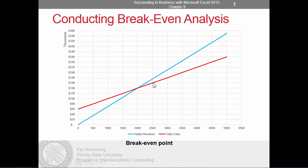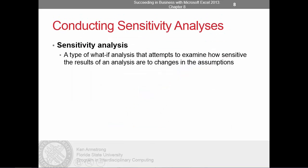Now let's look at a sensitivity analysis for our swim skins. Sensitivity analysis is another type of what-if analysis that examines how sensitive the results of an analysis are to changes in our underlying assumptions. In other words, as you change the value of one assumption, how do the results of our calculation react to that change?